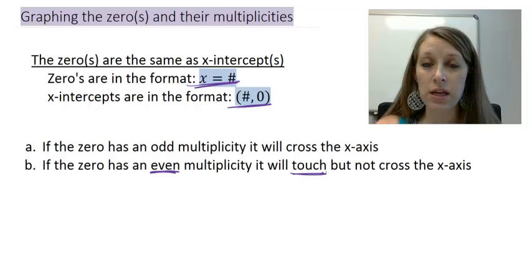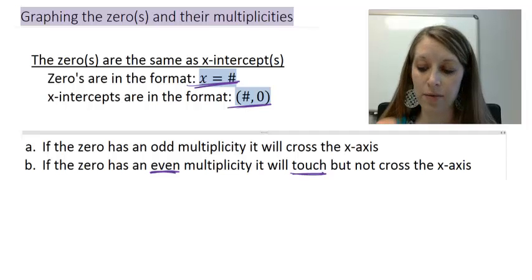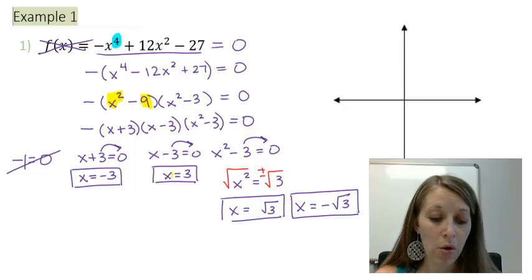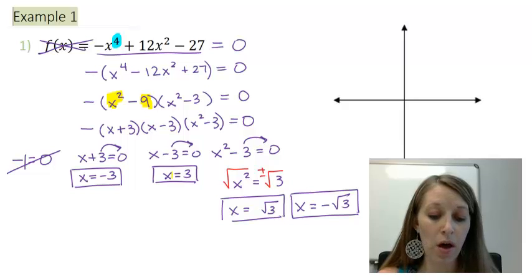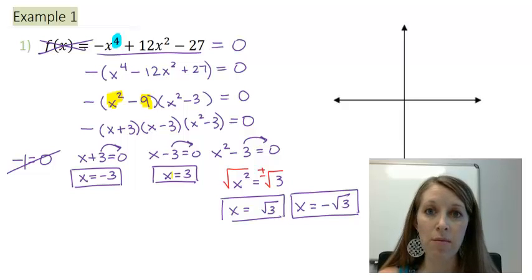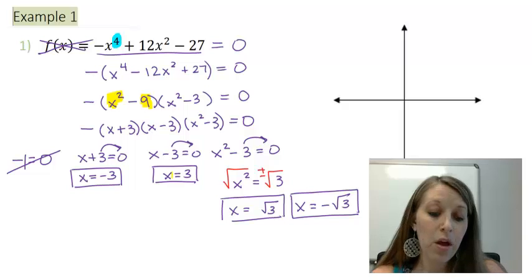Let's look at the three examples from the last video where we found the zeros, and now plot those on our graph. In example one, we had f(x) equal to negative x to the fourth plus 12x squared minus 27. It was a degree 4 polynomial, so we came up with four zeros, boxed at the bottom.